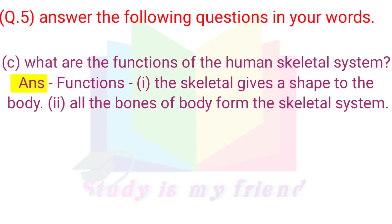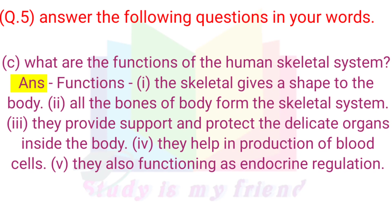Question 5C. What are the functions of the human skeletal system? Answer — Functions: The skeleton gives shape to the body. The bones form the skeletal system and provide support and protect the delicate organs inside the body. They help in the production of blood cells. They also function in endocrine regulation.